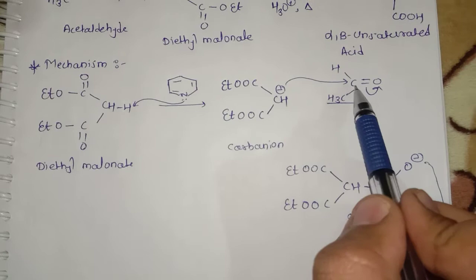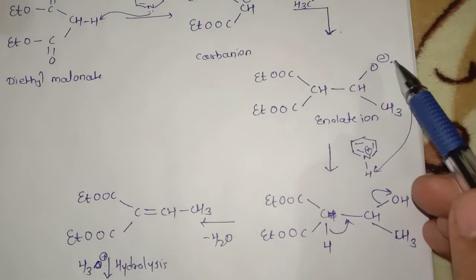In the next step, carbanion attacks the carbonyl carbon of aldehyde or ketone to form enolate ion.